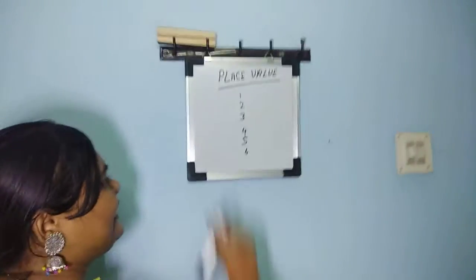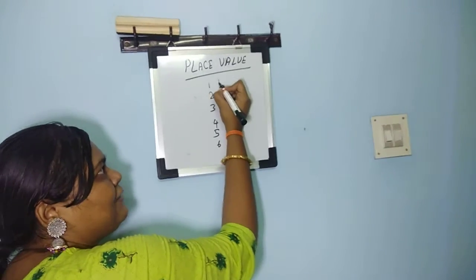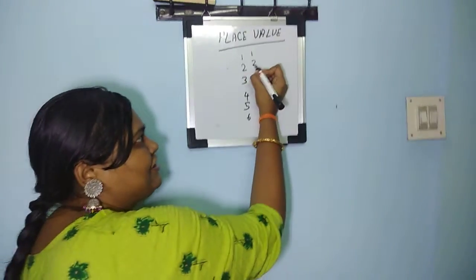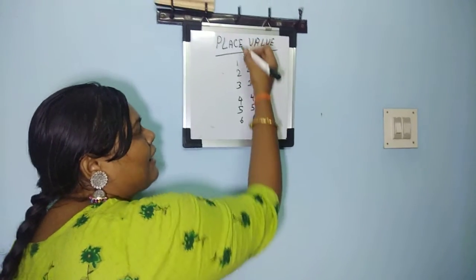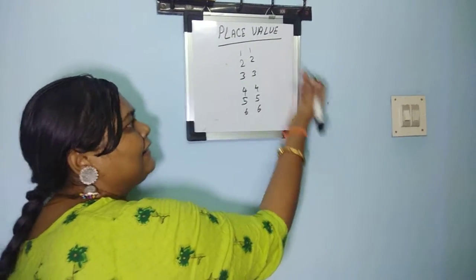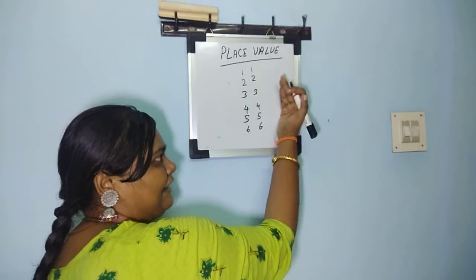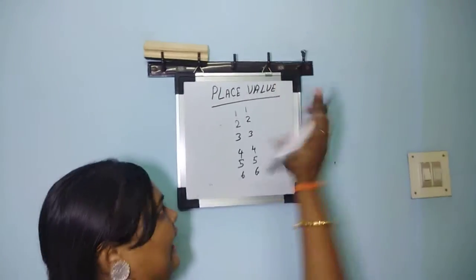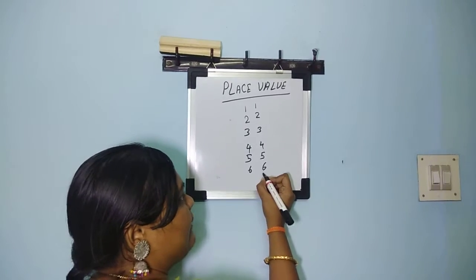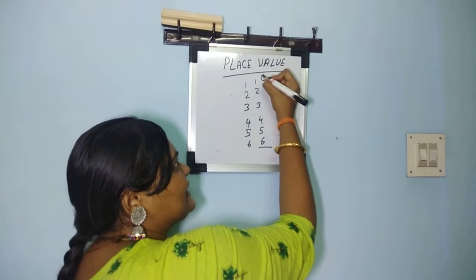When it comes to the two digit number, I will just write one more time: 1, 2, 3, 4, 5, 6. So ask them the right side, I mean when you are saying here, the right hand here will be called as ones.